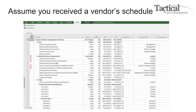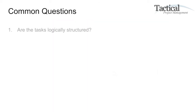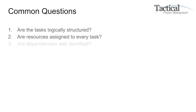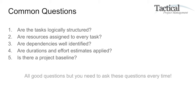So let's assume you received a vendor's project schedule. What's the overall schedule quality? It's hard to tell just by looking at it. Some common questions that emerge: Are the tasks logically structured? Are the resources assigned to every task? Are the dependencies well identified? Are durations and effort estimates applied? Is there a project baseline? All good questions, but you need to ask these questions every single time — manually.